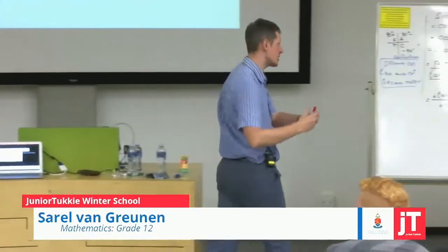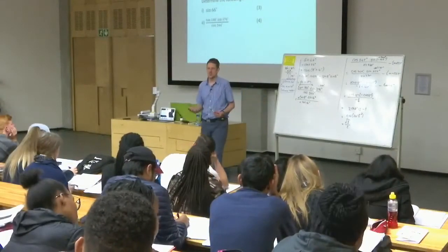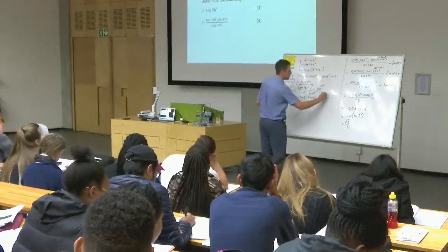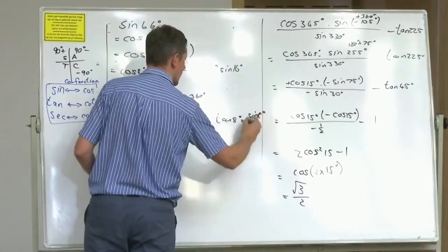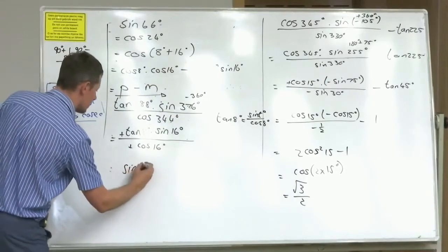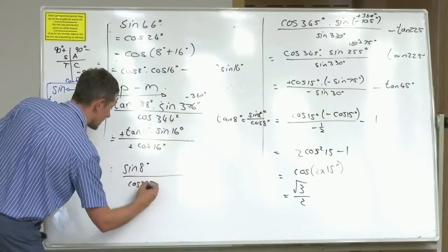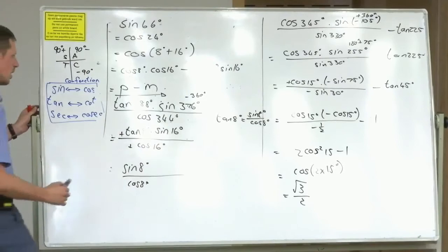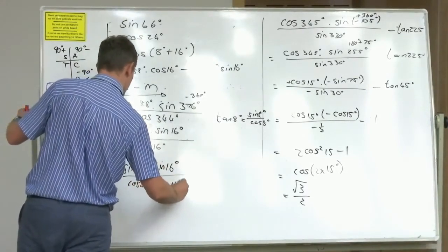Ladies and gents, let's finish this one off. I don't want tan of 8. I want signs and causes. So what am I going to do? Tan of 8 is sign 8 over cos 8. So I'm going to do some funky magic. I'm going to put the sign 8 at the top and the cos 8 at the bottom. Because it's multiplication, it doesn't matter. And then I've got a sign 16 at the top and a cos 16 at the bottom.